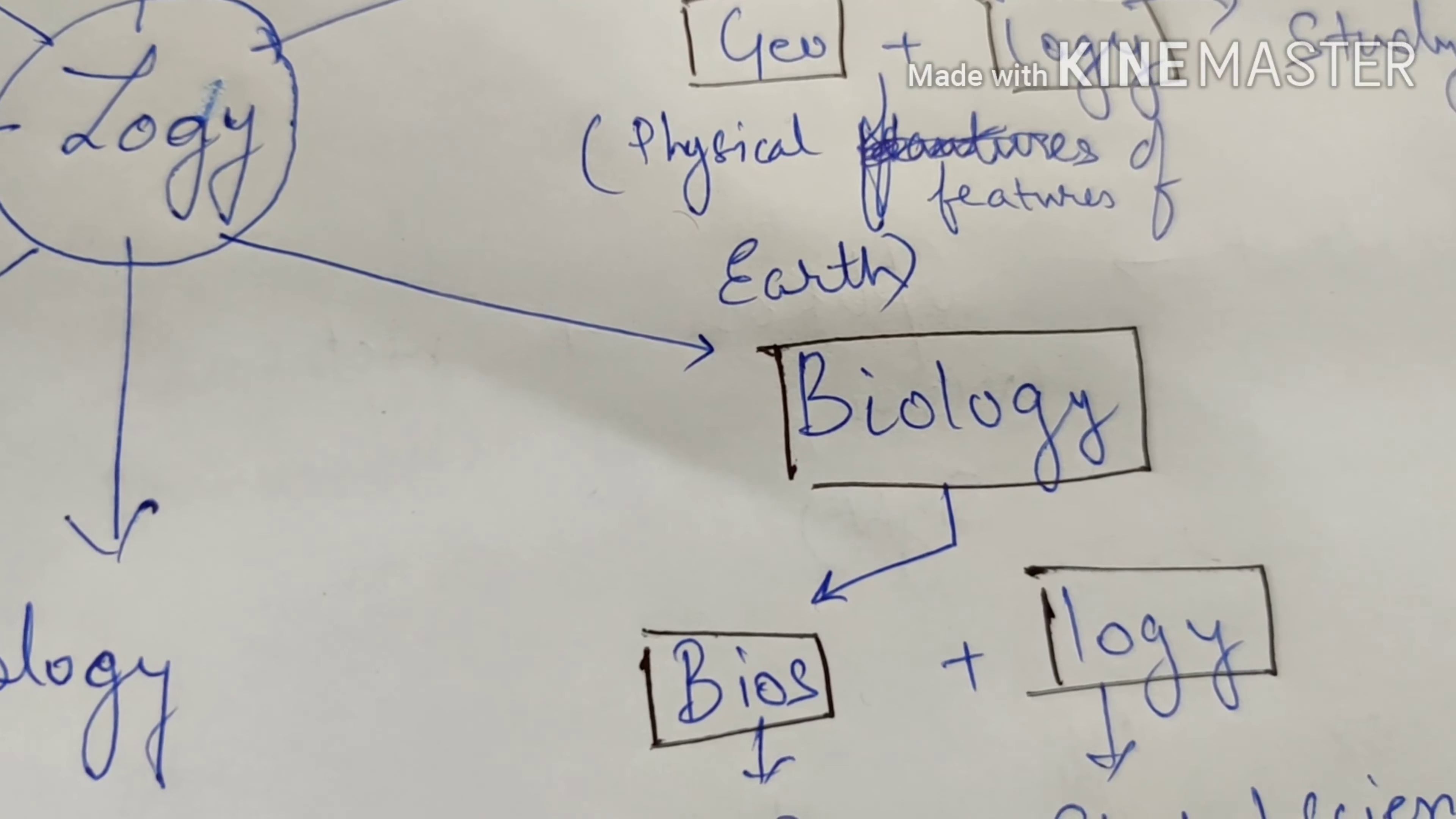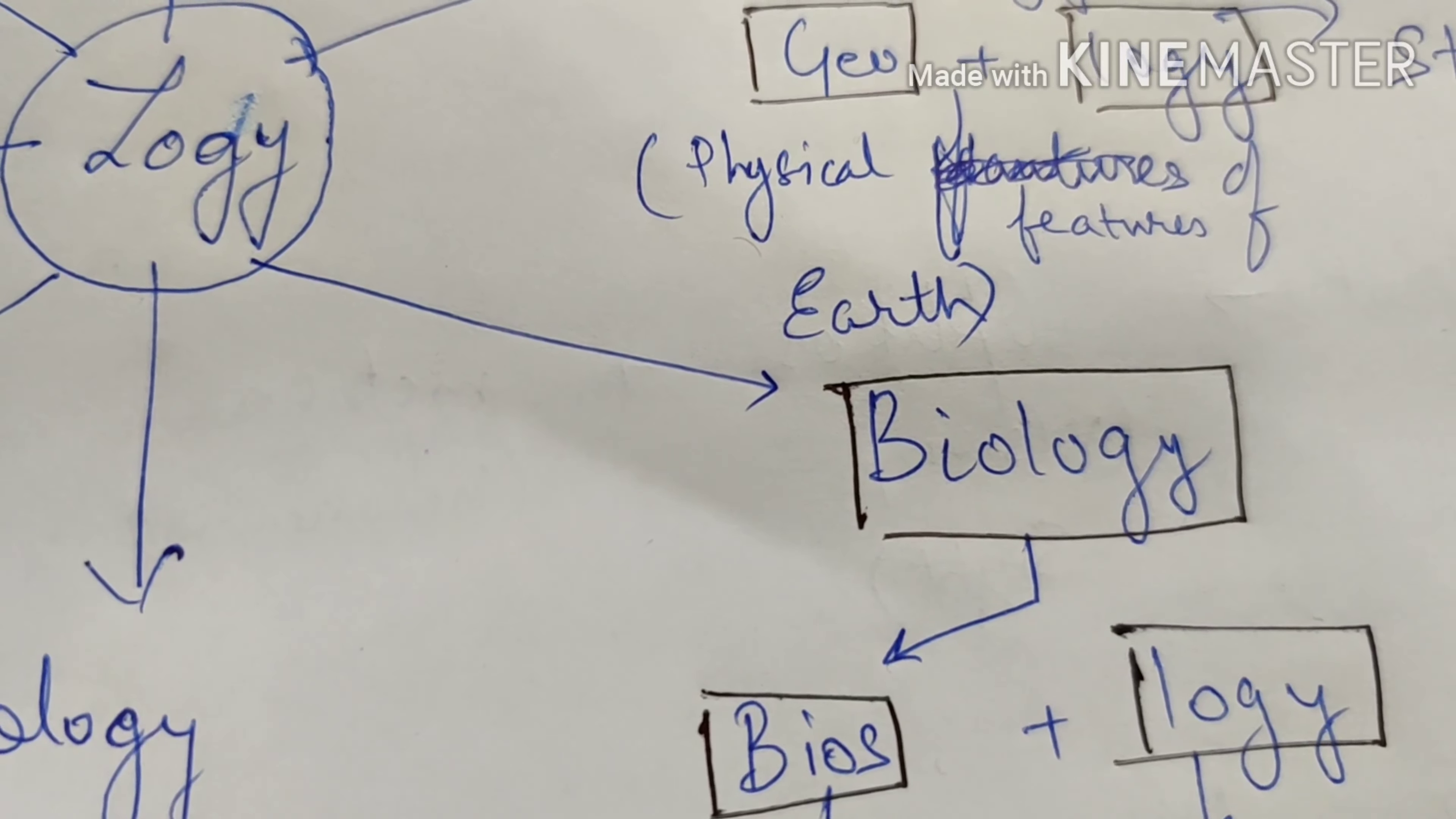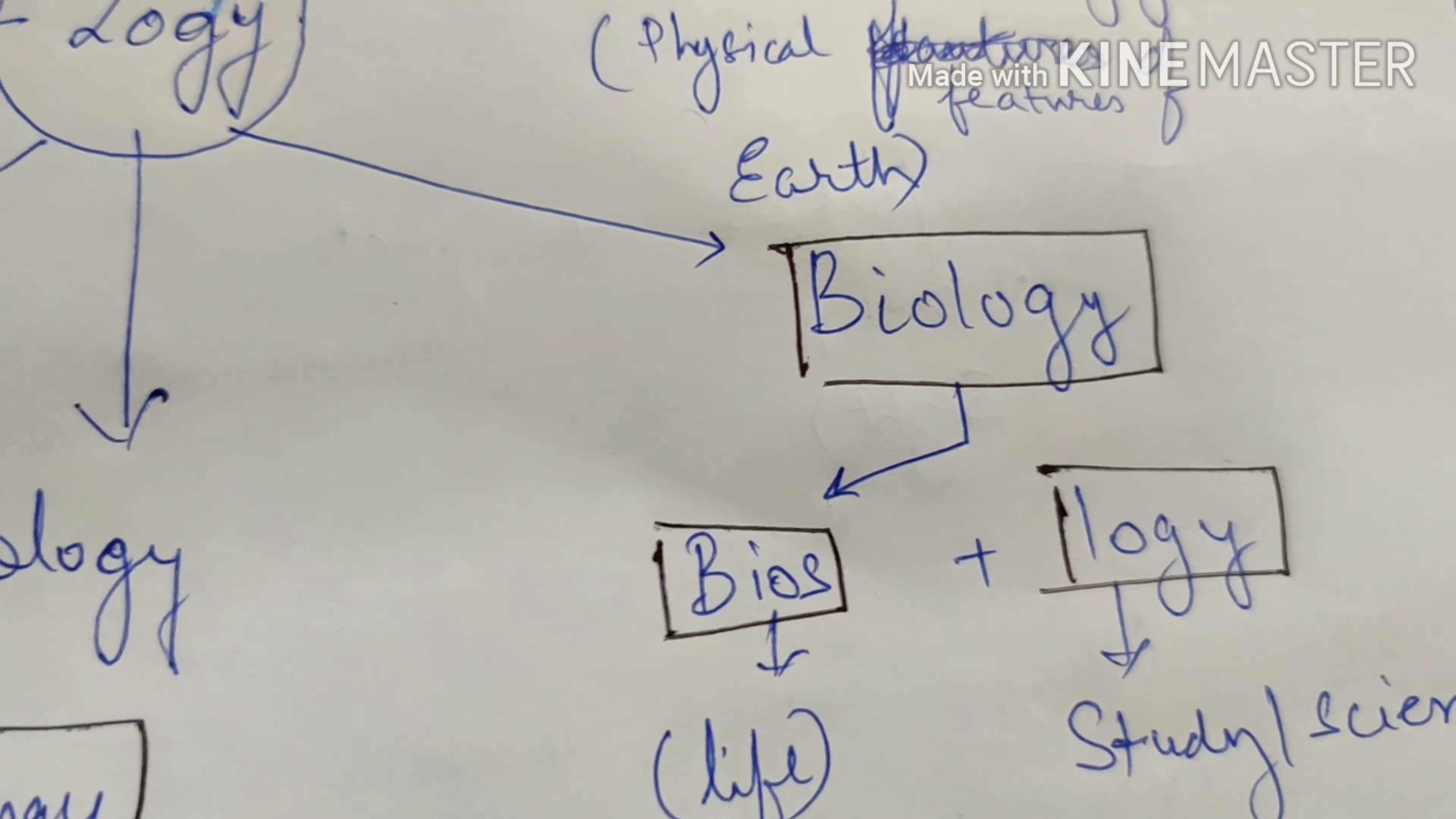Biology, we all know biology is a study of or science that deals with the study of lives or different forms of organisms. Now bios refers to life and logi is study or science. That's how biology comes up.